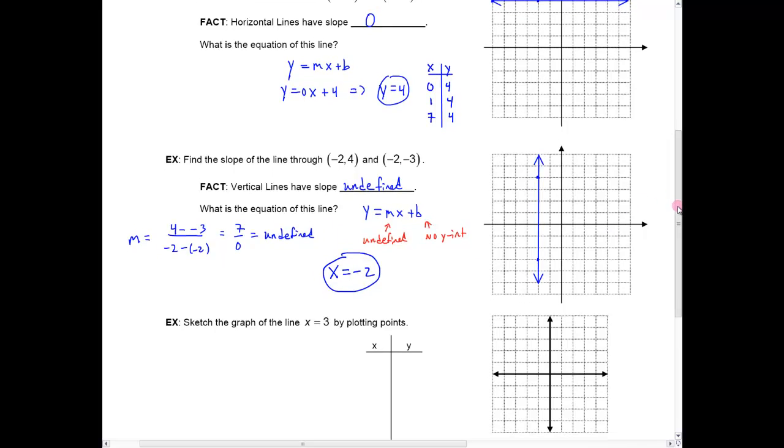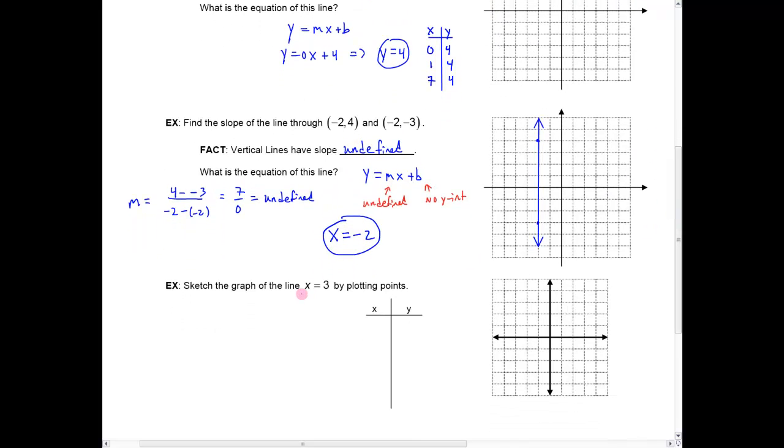So, again, if I wanted to look, suppose I wanted to graph the line x equals 3 by plotting points in the same way I did up above here, this would say it doesn't matter what y is, x is always 3. So, if y is 0, x is 3. If y is 1, x is 3. If y is negative 2, x is 3. So, when I plot these, I'm going to get just a bunch of ordered pairs that are on this vertical line that goes through x equals 3.